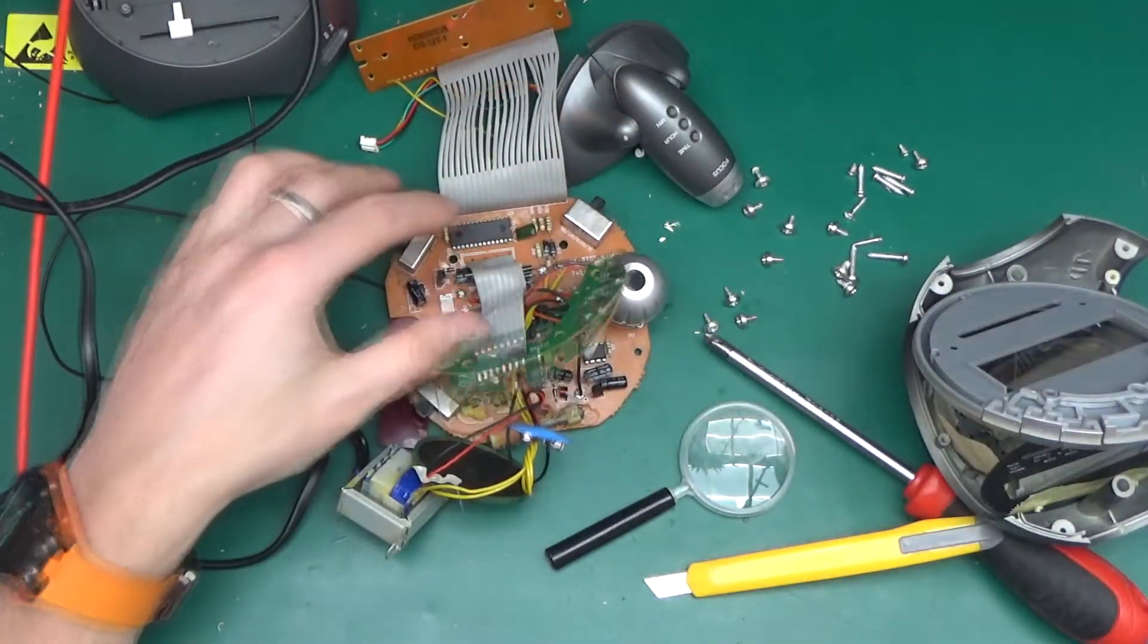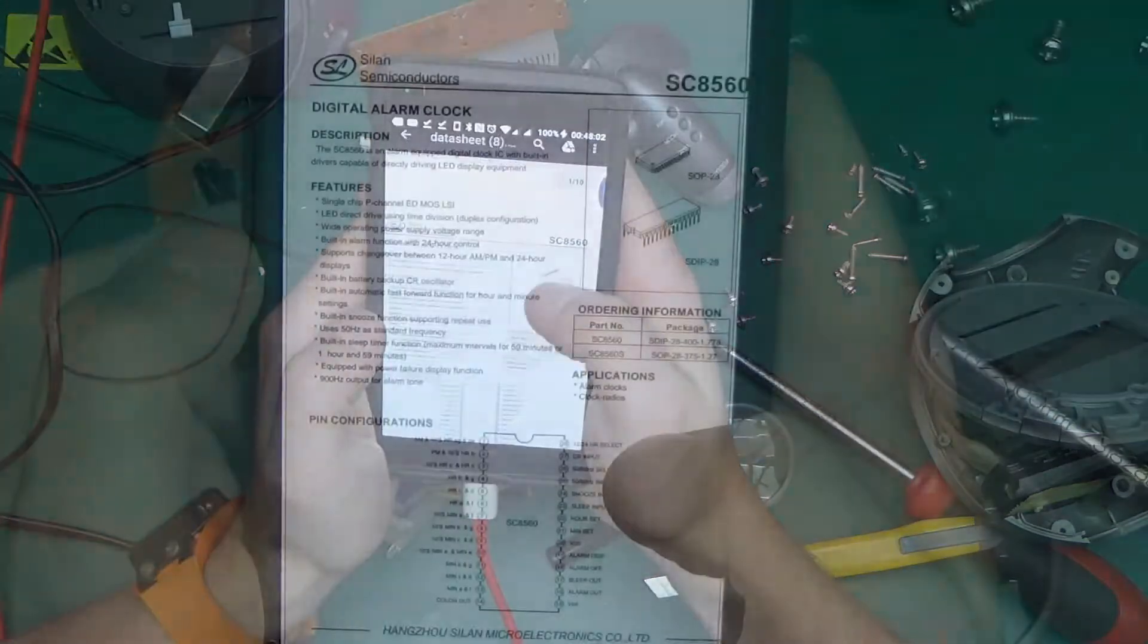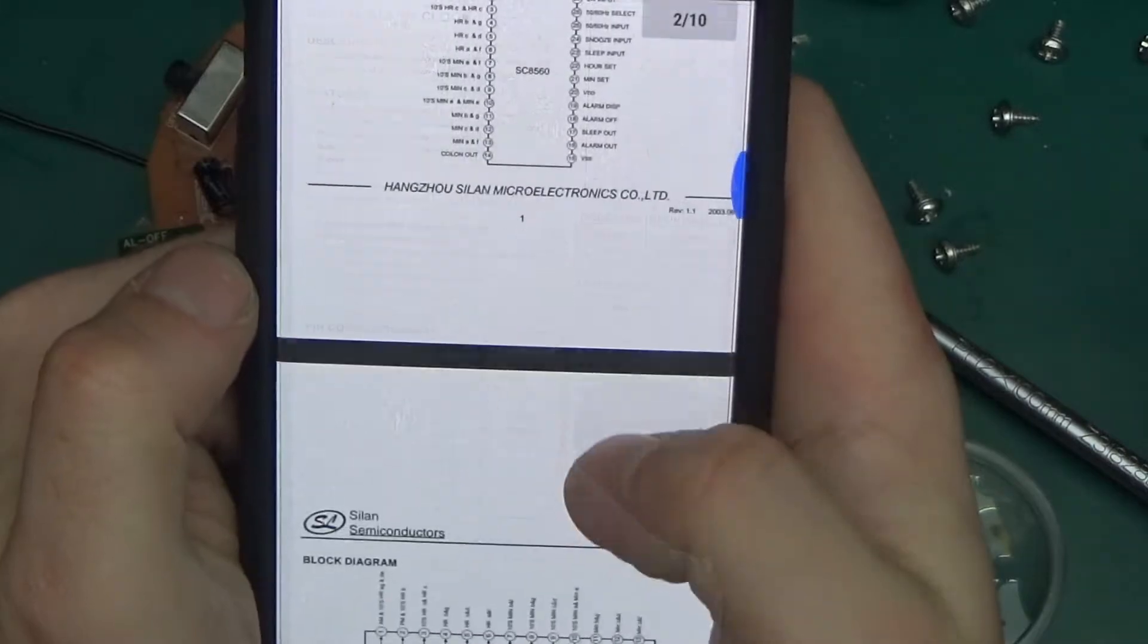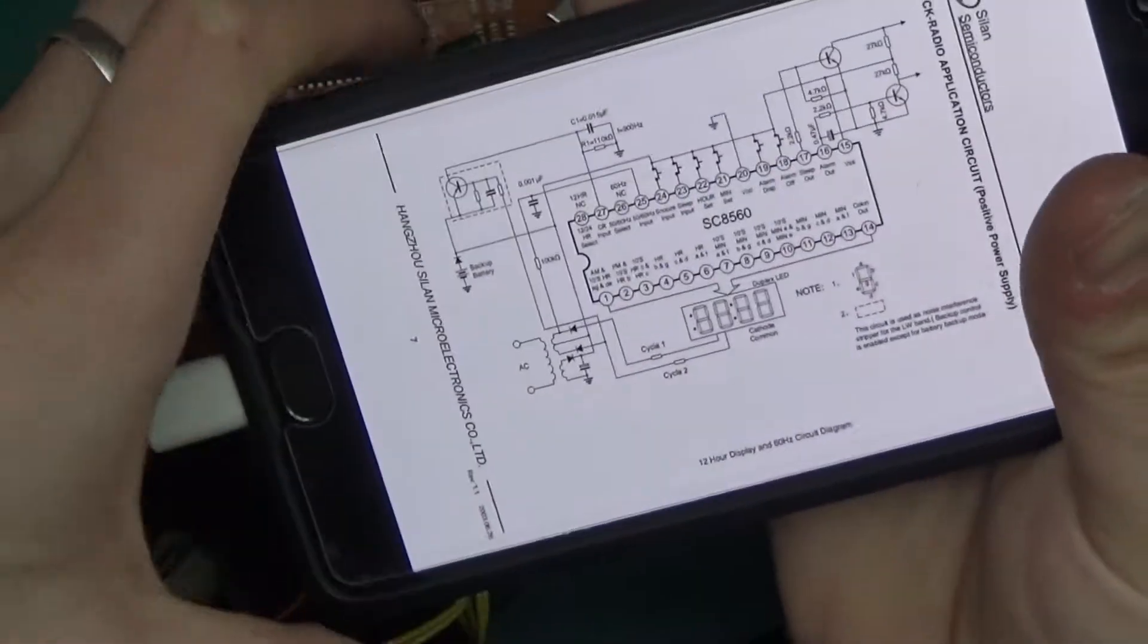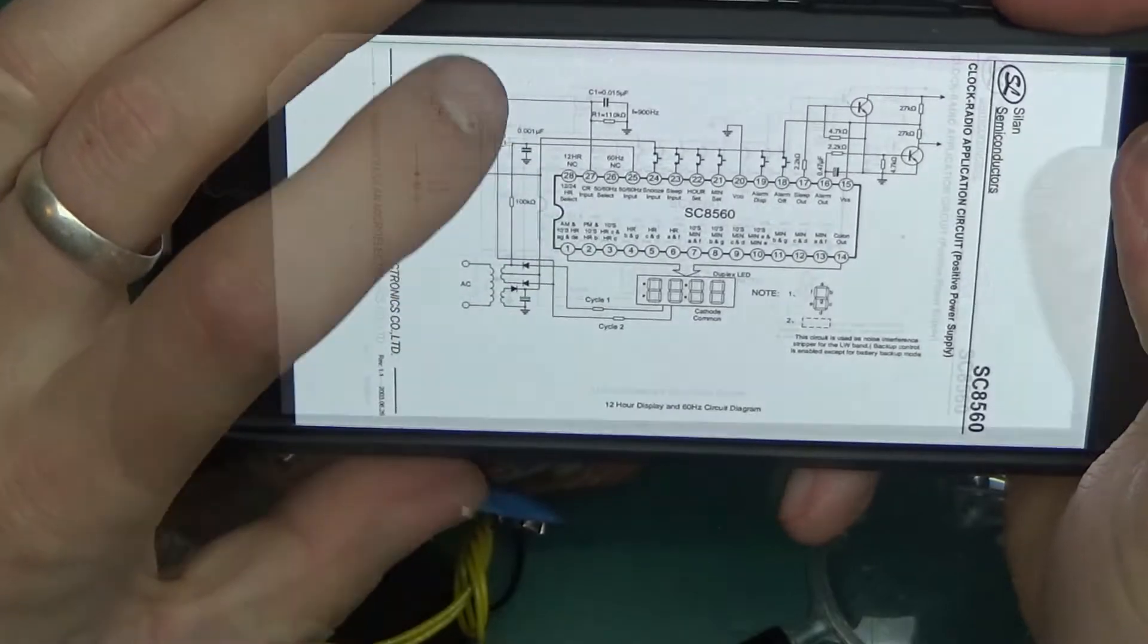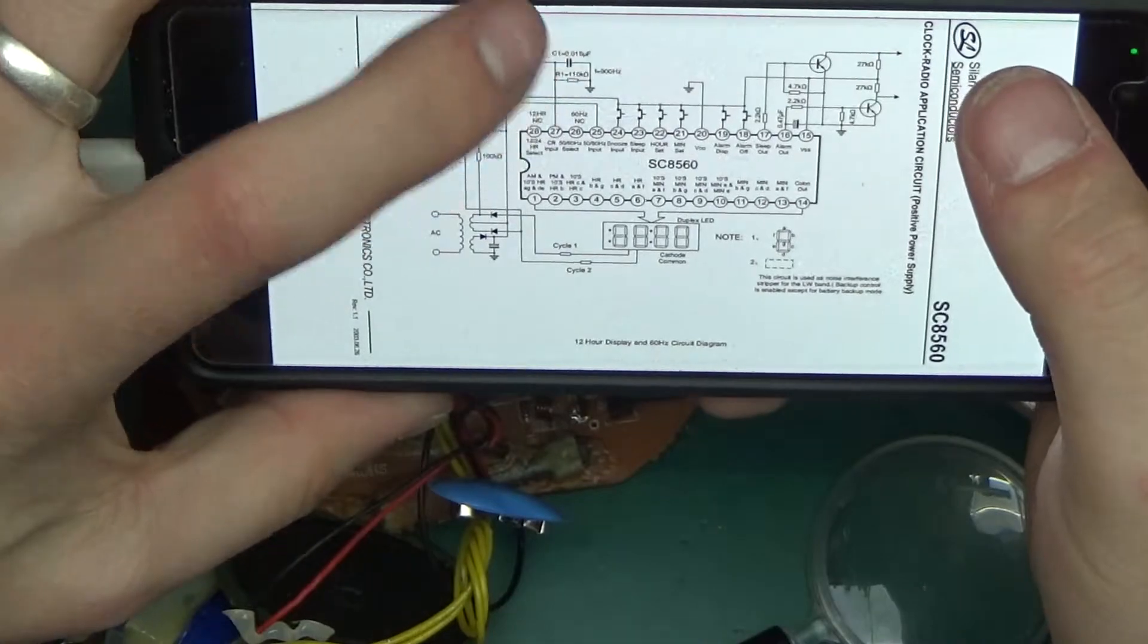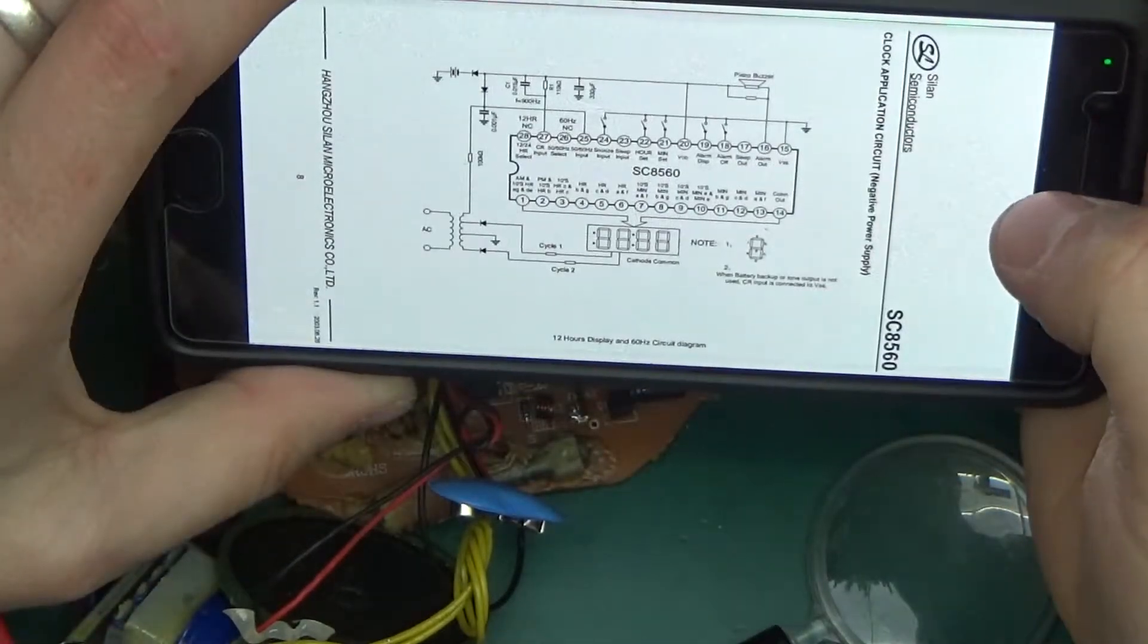And the chip on the board is an SC8560 and here is the datasheet for it. As you can see we've got the SDIP28 package in this device. Scrolling down, there we go. This is the entire schematic needed to implement a clock. We've got AC transformer, common cathode LED display, two transistors, some switches, few resistors, one capacitor and that's it. Really simple.